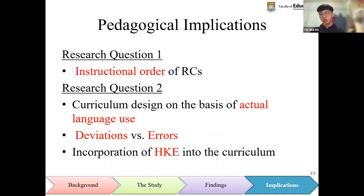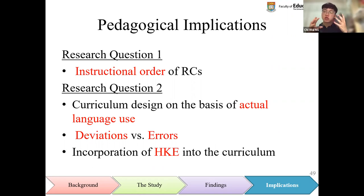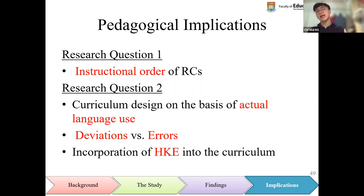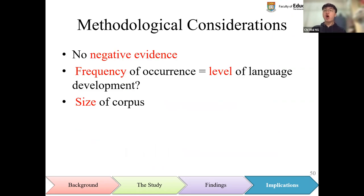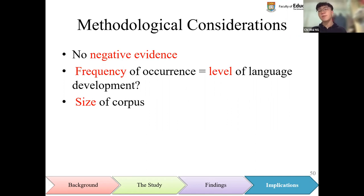As for pedagogical implications, since the perceptual difficulty hypothesis is fully supported by data of Hong Kong English, it could inform the instructional order of relative clauses in Hong Kong. Curriculum developers ought to take into consideration learners' actual language use — whether different types of relative clauses are frequently or rarely used — when designing the curriculum. They should not treat deviations or non-standard relative clauses necessarily as errors; on the contrary, features of Hong Kong English ought to be incorporated into the curriculum. Corpus linguistics as a research methodology does have limitations: it fails to provide any negative evidence as to what learners fail to master; frequency of occurrence does not necessarily imply the level of language development; and a large corpus size is necessary for more valid data.